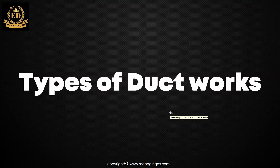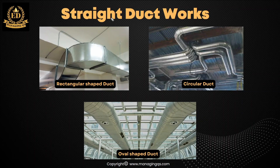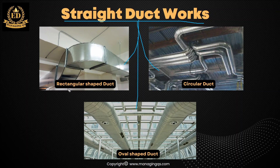Let's start the session. The first category is straight ductwork. Under this heading we can see three types of ductwork. The first one is the rectangular shaped duct — the surface of the ductwork looks like a rectangle, so that's why we call it a rectangular shaped duct.